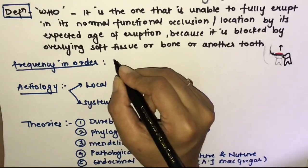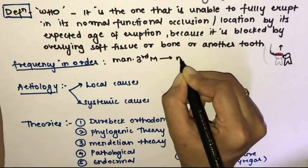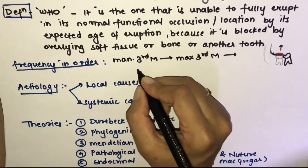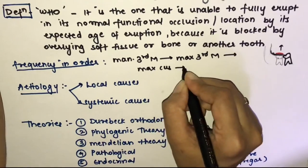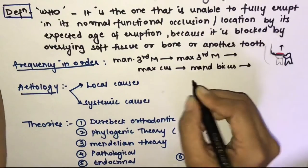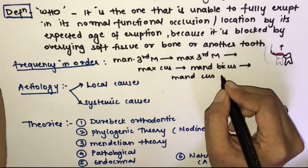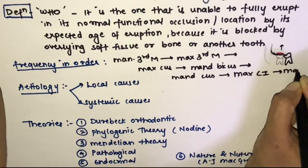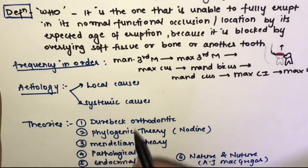The frequency of impacted teeth occurs in the following order: the most commonly impacted tooth is the mandibular third molar, followed by the maxillary third molar, then maxillary cuspids (canines), mandibular bicuspids, mandibular cuspids, maxillary central incisors, and finally maxillary lateral incisors.